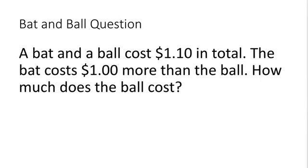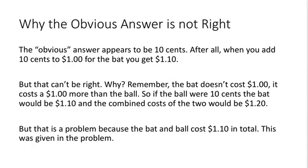It's a simple question. It simply says a bat and a ball cost $1.10 in total. The bat costs $1 more than the ball. How much does the ball cost? The obvious answer is not right. It appears to be $0.10. After all, when you add $0.10 to $1 for the bat, you get $1.10, which seems to add up to the number we need.